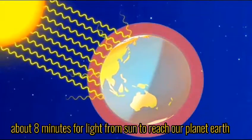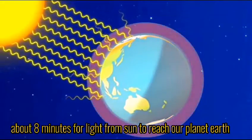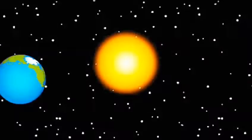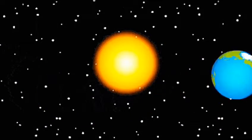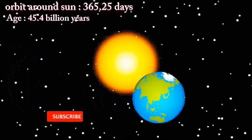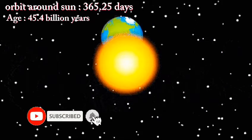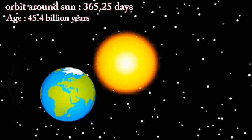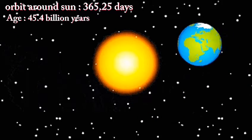Light takes about 8 minutes to travel from Sun to Earth. Do you know how long it takes Earth to go around the Sun? Yes, it completes one orbit in 365.25 days. Do you know that our Earth is 4.5 billion years old?